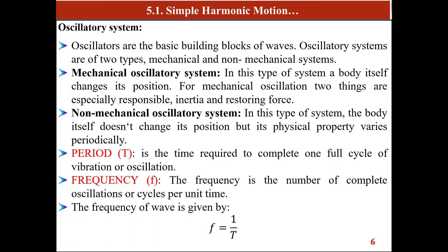Important terms in oscillation: the period is the time required for one complete oscillation or one full cycle. Frequency is the number of complete oscillations or cycles per unit time. Frequency is given by f = 1/T. For example, if the period is 20 seconds, then the frequency is 1/20 = 0.05 Hz.